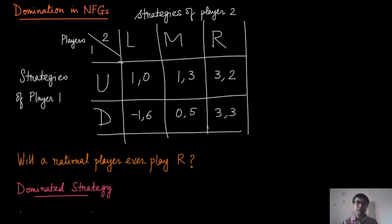Let's start with a new concept called domination in normal form games. The best way is to explain with an example. Let's say there are two players, Player 1 and Player 2. Player 1 has two strategies: Up or Down, and Player 2 has three strategies: Left, Middle, or Right. The numbers are appropriately chosen, so let's focus on what happens in this game.